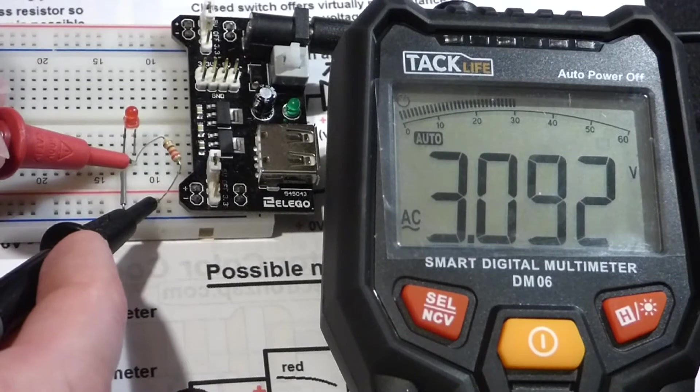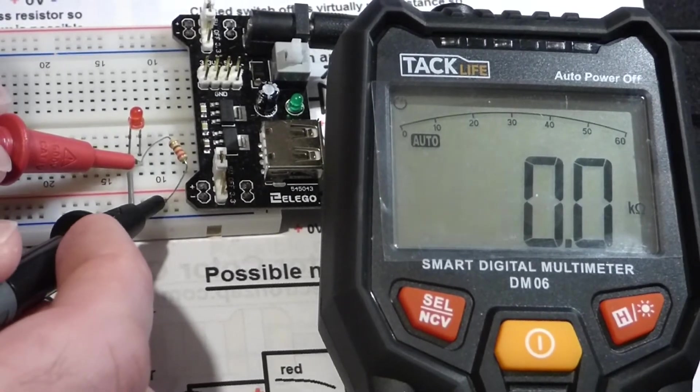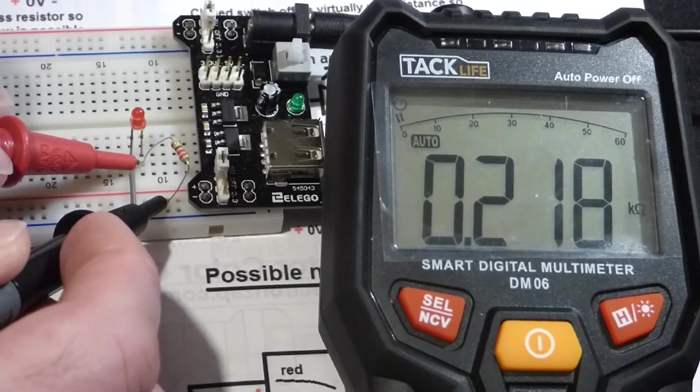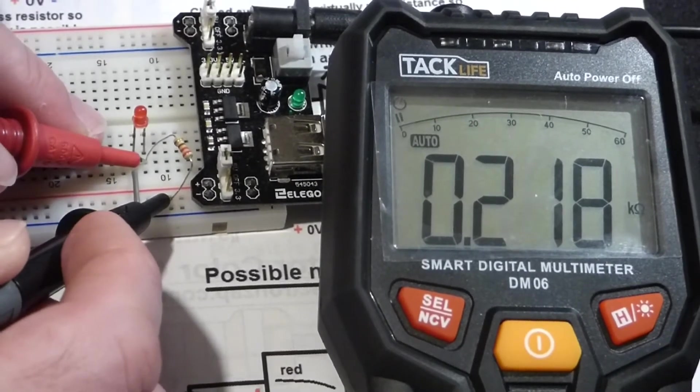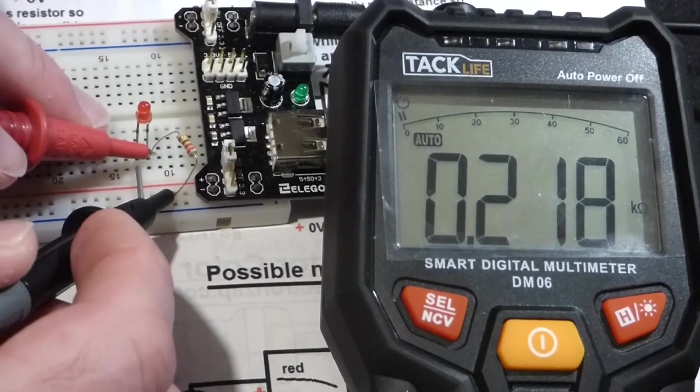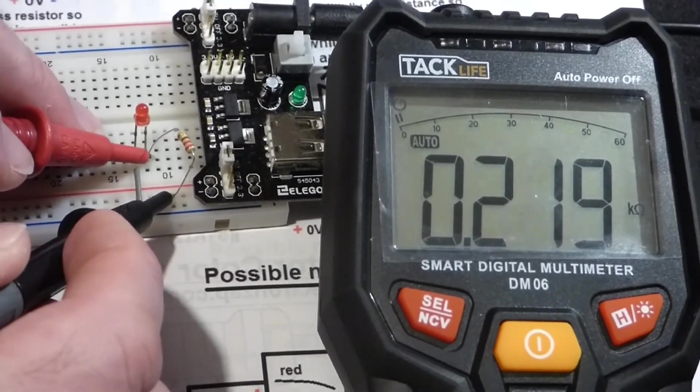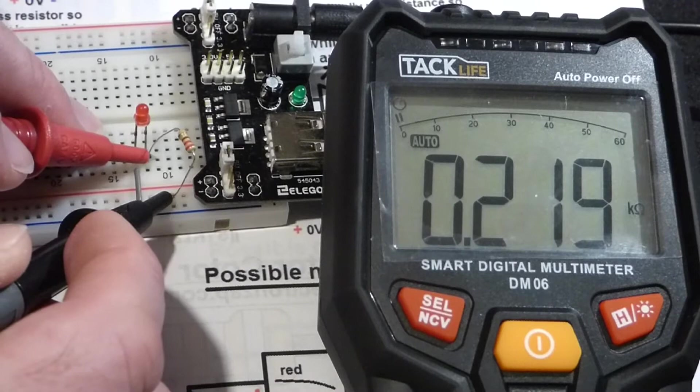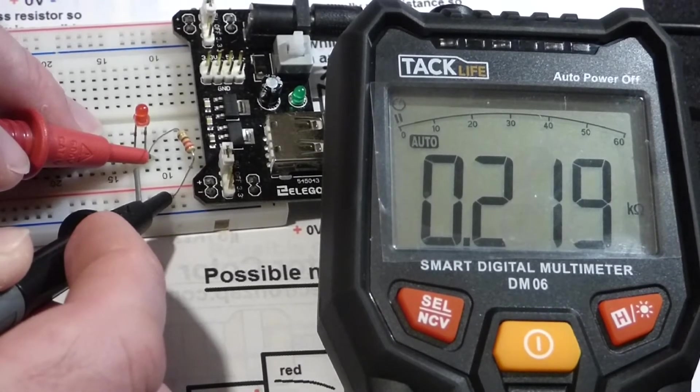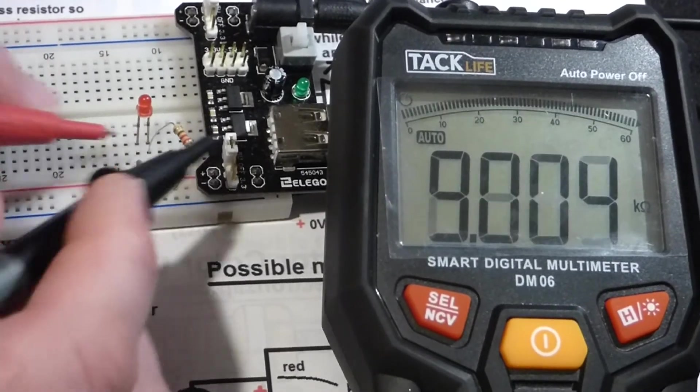Now we're going to measure across the resistor here. This is a 220 ohm resistor. You can see 0.219 in that range ohms on the meter. Now that's in kilo-ohms, so that's thousands of ohms. This is 0.219,000 ohms. That's the same as 200 and practically 20 ohms.